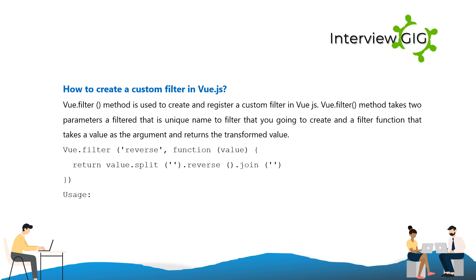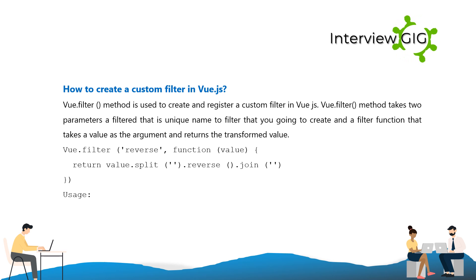How to create a custom filter in Vue.js? The Vue.filter method is used to create and register a custom filter in Vue.js. The Vue.filter method takes two parameters: a filter name that is unique to the filter you're creating, and a filter function that takes a value as the argument and returns the transformed value.